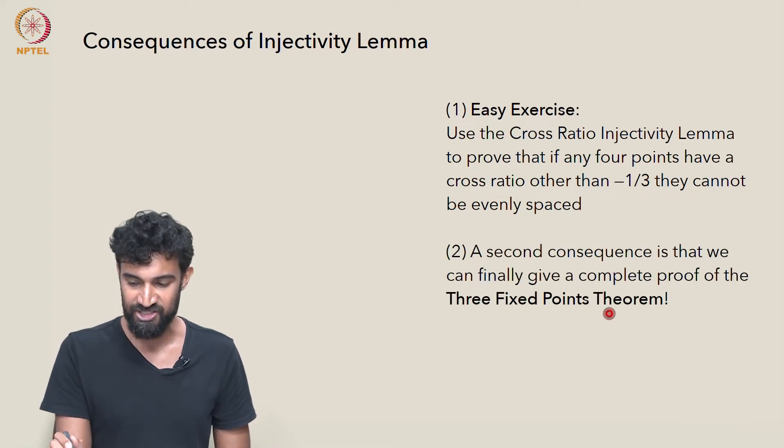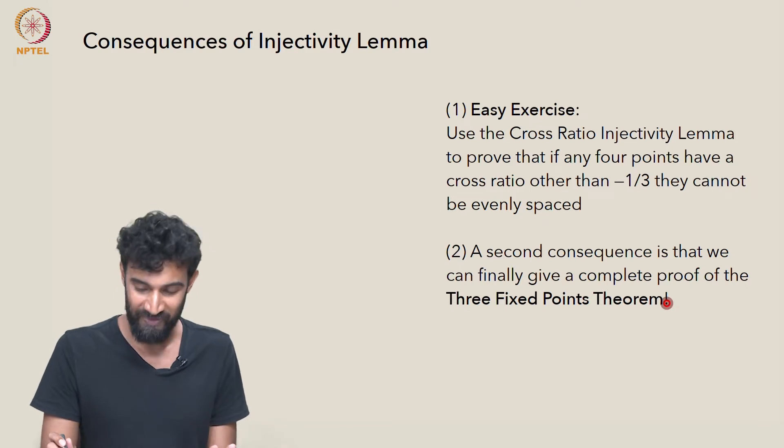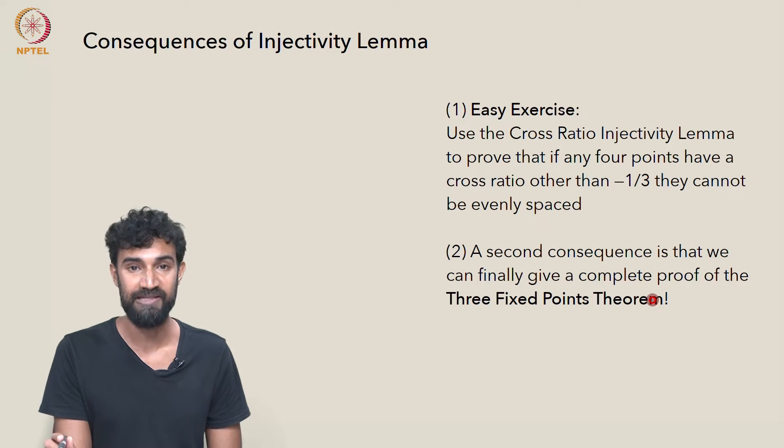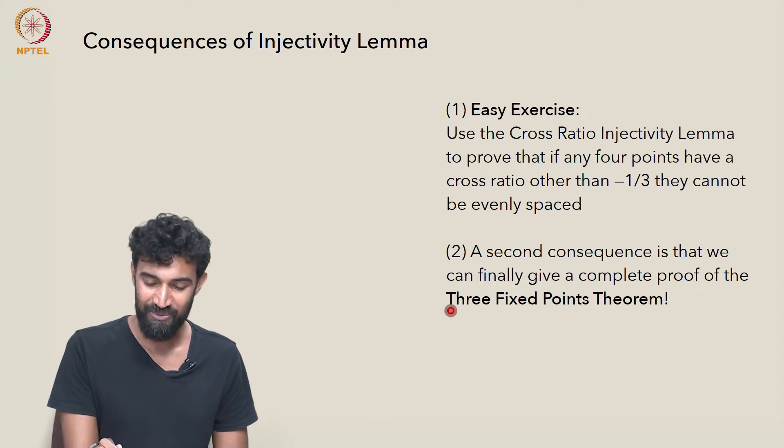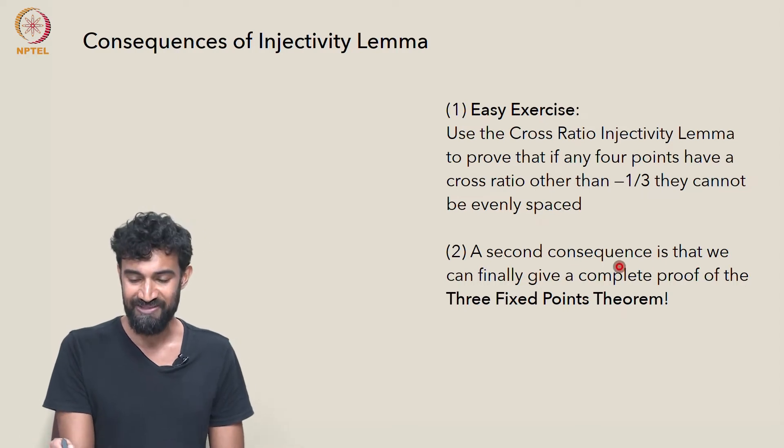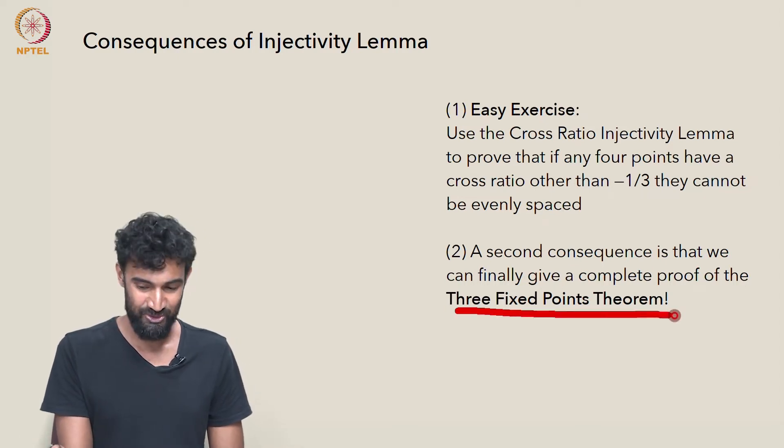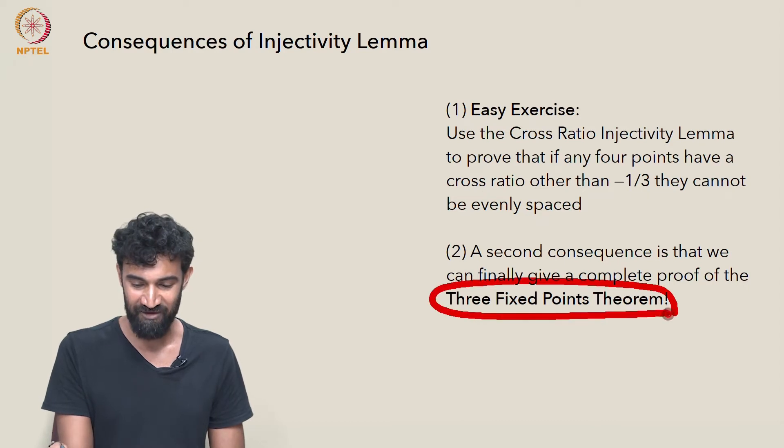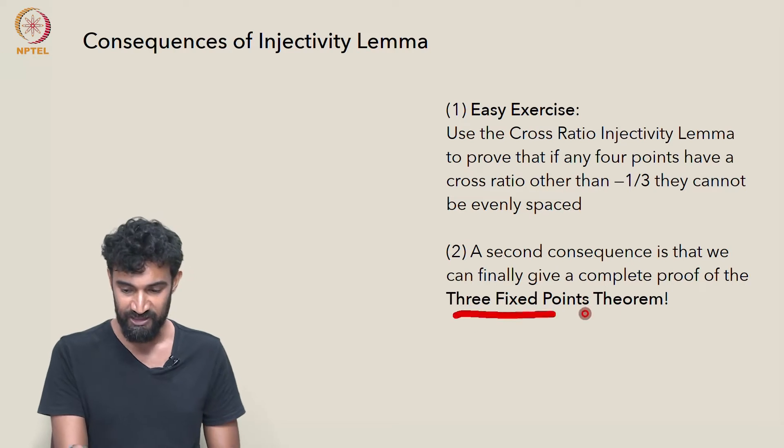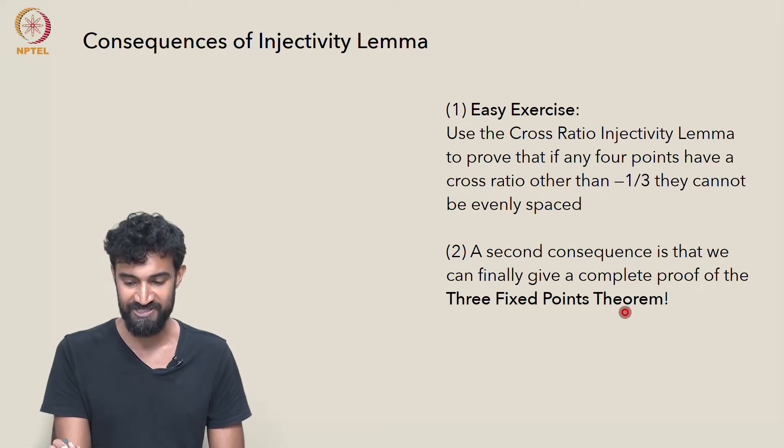And as a second consequence, which I'll do in more detail, we can finally give a complete proof of the three fixed points theorem. Remember, we gave a sketch of a proof earlier that involved linear fractional functions. But we'll give a very different proof now using the cross-ratio injectivity lemma. And this is an important consequence because we've been using other consequences of the three fixed points theorem all over the place. So finally, everything will be justified once we can prove this theorem.